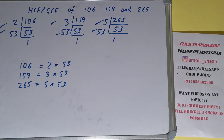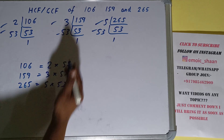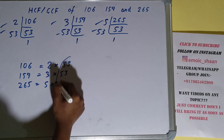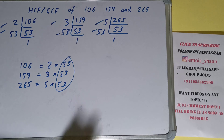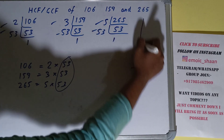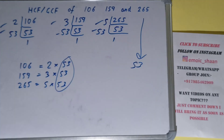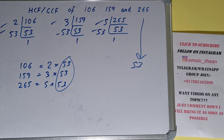The next thing we need to do is circle out the common prime factor. It is clear that we have only 53 in common among all three, so the answer will be 53. The HCF or GCF of the numbers 106, 159, and 265 is 53. If you found the video helpful, please hit the like button, consider subscribing, and thanks for watching.